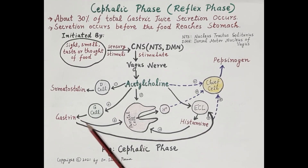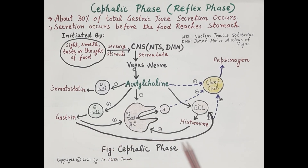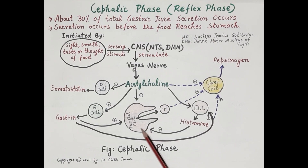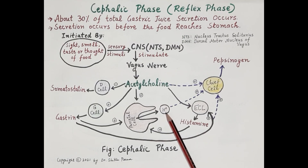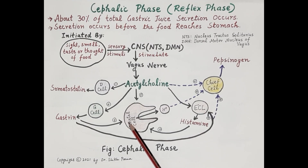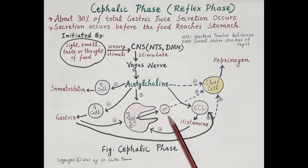Gastrin stimulates parietal cells directly by binding to CCK2 receptors — that is, cholecystokinin-2 receptors — on the parietal cells, stimulating them to release acid. Apart from this, gastrin also stimulates enterochromaffin-like cells to release histamine. Once histamine is released, it binds to its H2 receptors on the parietal cells, stimulating the parietal cells to release acid. Thus, all these secretagogues — acetylcholine, gastrin, and histamine — stimulate the parietal cells either directly or indirectly to stimulate the release of acid.